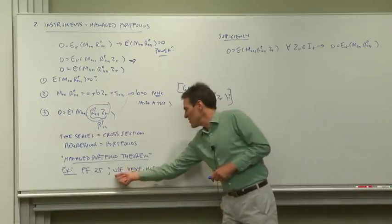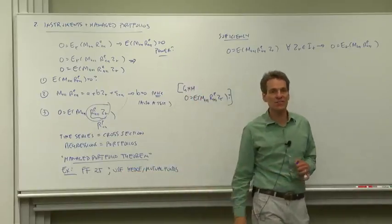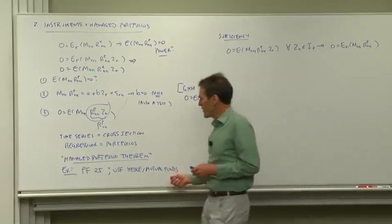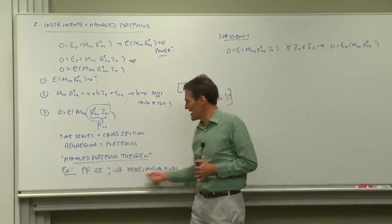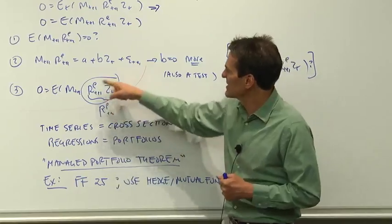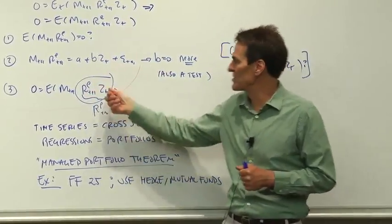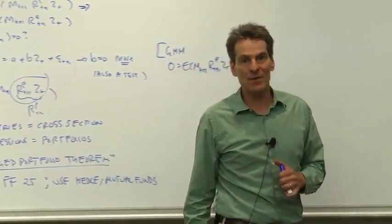Another example, empirical asset pricing uses the returns of hedge funds and mutual funds all the time. What are we doing then? We can just use unconditional asset pricing, cross-sectional asset pricing, using hedge fund and mutual fund returns to see if the managed portfolios they're using to incorporate information tell us something about our asset pricing models.